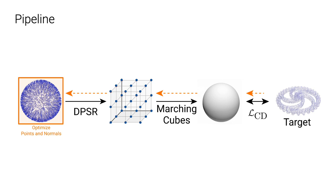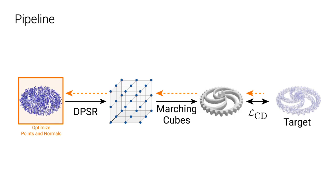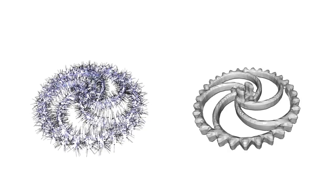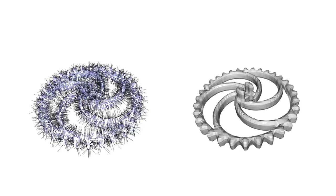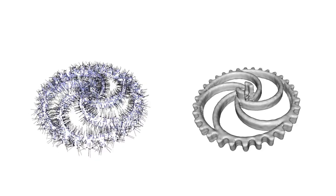Now, every step is differentiable including our DPSR, so we can update the source point clouds under the optimization pipeline. This optimizable source point cloud together with our Poisson solver is treated as the shape-as-points representation. We apply a coarse-to-fine strategy to speed up the optimization process, and also a point resampling strategy to eliminate outlier points that drifted away from the surface, enforcing a more uniform distribution of points.